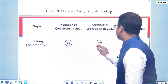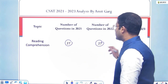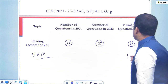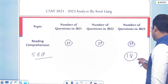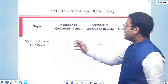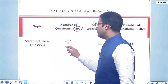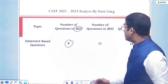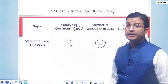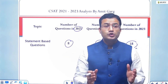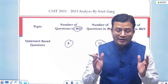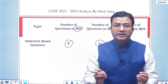For reading comprehension, they asked around 27 questions. For statement-based questions, they asked 18 questions in 2023 — compared to 8 questions in 2021 and 11 in 2022. Students are facing problems handling data sufficiency and statement-based questions.